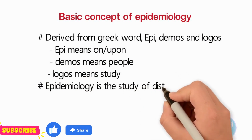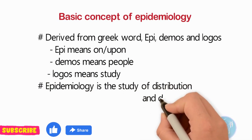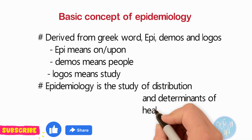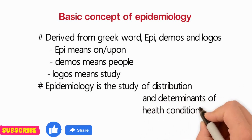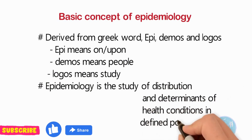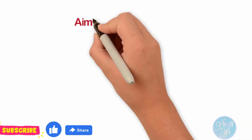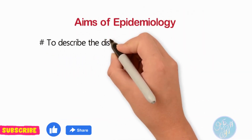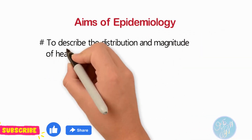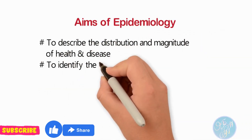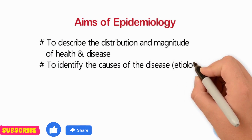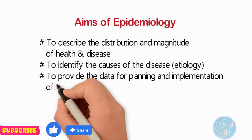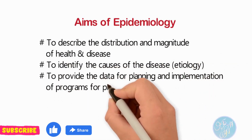Epidemiology is the study of distribution and determinants of health conditions in a defined human population. There are three major aims of epidemiology: first, to describe the distribution and magnitude of health and disease; second, to identify the causes of disease; and third, to provide data for planning and implementation of programs for prevention, control, and treatment of disease.